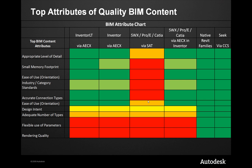Now let's go ahead and chart this out — top attributes of BIM quality content. I've combined some of the key elements from a manufacturer's point of view as well as from a Revit user's point of view. If we take a look at the top content attributes: appropriate level of detail, memory footprint, and ease of use.